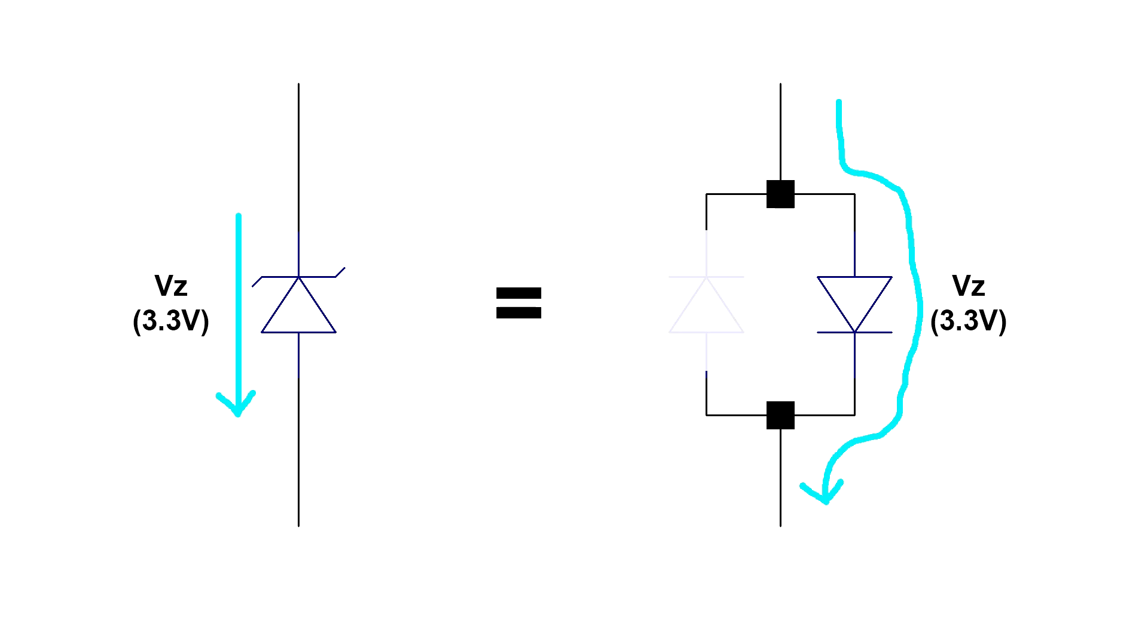This property of having a predictable voltage drop is what makes Zener diodes useful. If you set your circuit up just right, you can use Zener diodes to limit the voltage that other devices receive.